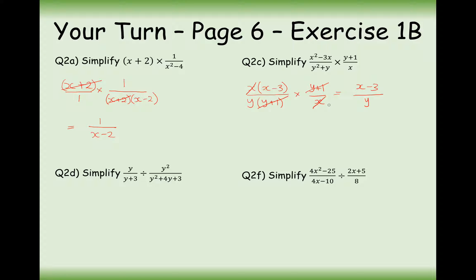When you've cancelled out on a fraction the whole top or the whole bottom, effectively what you're left with there is 1, not 0. So don't make the mistake of putting a 0 there.